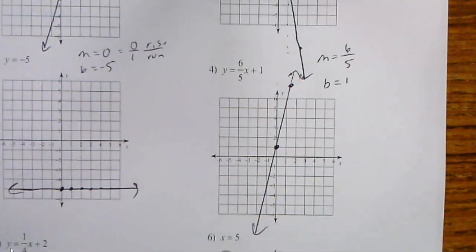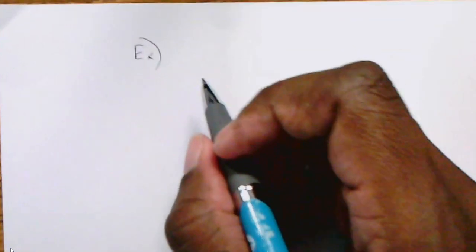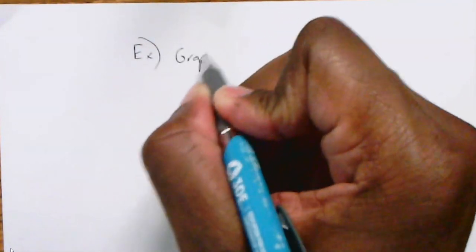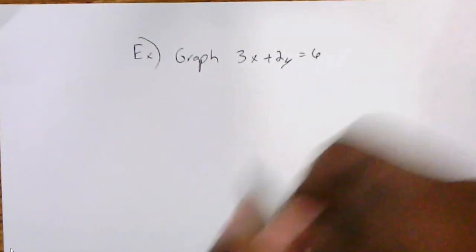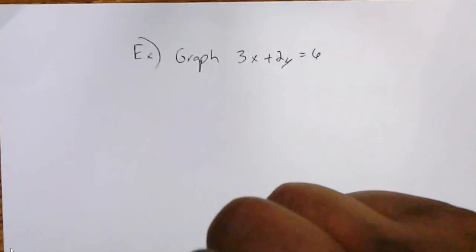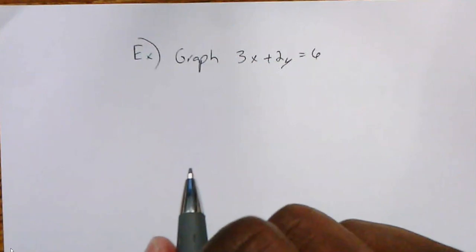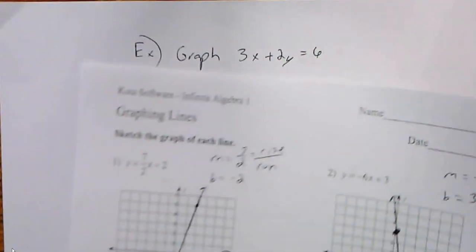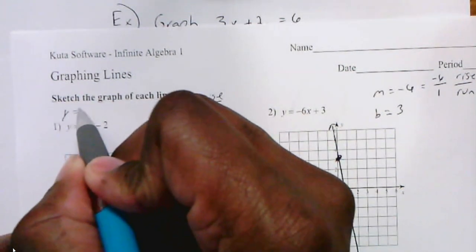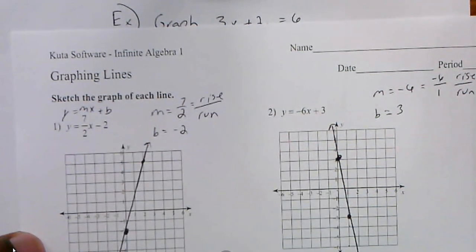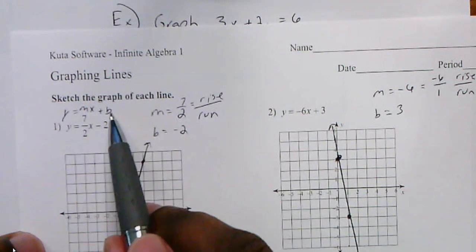Sometimes they're not already written in that form. For example, sometimes they give you an equation like this. It may give you the equation: graph 3x plus 2y equals 6. In this case, it's not already solved for y. In all the other examples we just looked at, the equation was already in slope-intercept form, where I can already see y equals mx plus b. Each time I can see my slope and my b value.